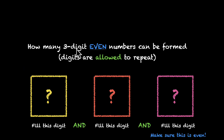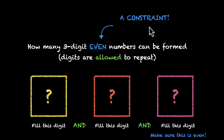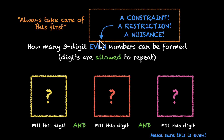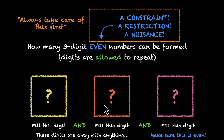Let's solve this mystery together. We had to form 3-digit even numbers and fill these three boxes. These first two boxes didn't have a problem, but the third one — because we wanted even numbers — had a constraint. In math this is called a constraint, or a restriction. Here's a very useful tip: wherever you see a constraint, always take care of that first. We were starting with the other digits first and taking care of the constrained digit last — that's why we were getting into trouble.